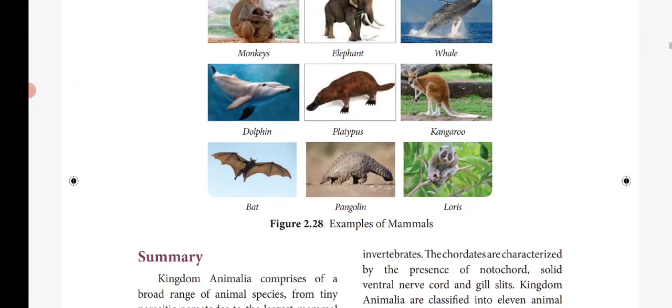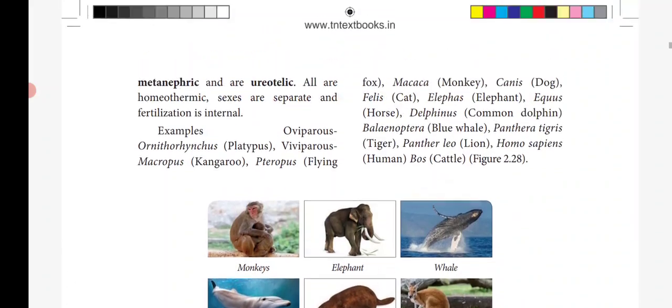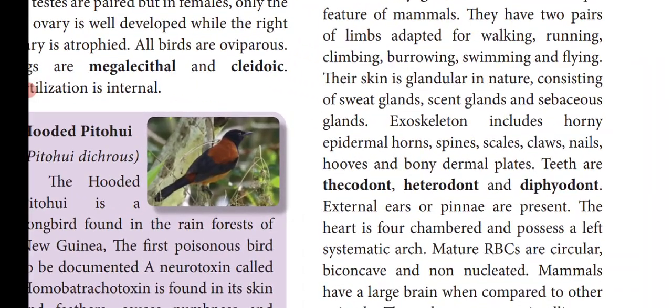Examples of mammals: oviparous — Ornithorhynchus, commonly called platypus. Viviparous examples: Macropus — kangaroo; Pteropus — flying fox; Macaca — monkey; Canis — dog; Felis — cat; Elephas — elephant; Equus — horse; Delphinus — common dolphin; Balaenoptera — blue whale; Panthera tigris — tiger; Panthera leo — lion; Homo sapiens — human; Bos — cattle.